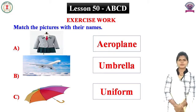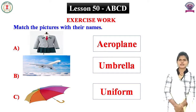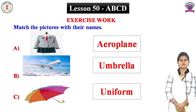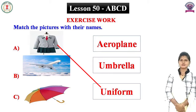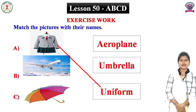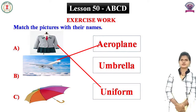Exercise two. Match the picture with their names. Yahan par ek taraf chitra diye gaye hain. Doosre taraf unke naam diye gaye hain. Aapko chitra ko unke naam ke saath milaan karna hai. Chaliye dekhte hain. Look at the first picture. This is a uniform. Dekhiye uniform kahan likha hua hai - sabse aakhri mein, third word: U, N, I, F, O, R, M. First picture ko third word ke saath milaan dijiye. Look at the second picture. What is this? This is an aeroplane. Aeroplane sabse upar mein likha hua hai. So second picture ko first word A, E, R, O, P, L, A, N, E ke saath milaan dijiye.